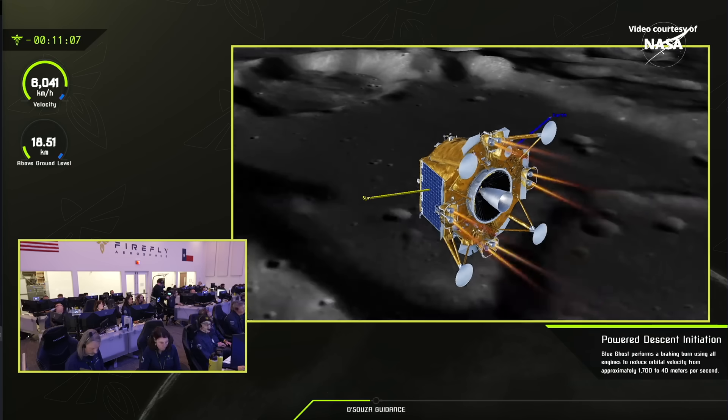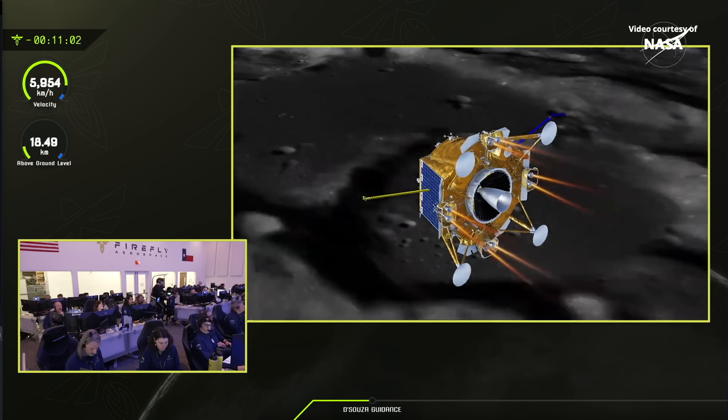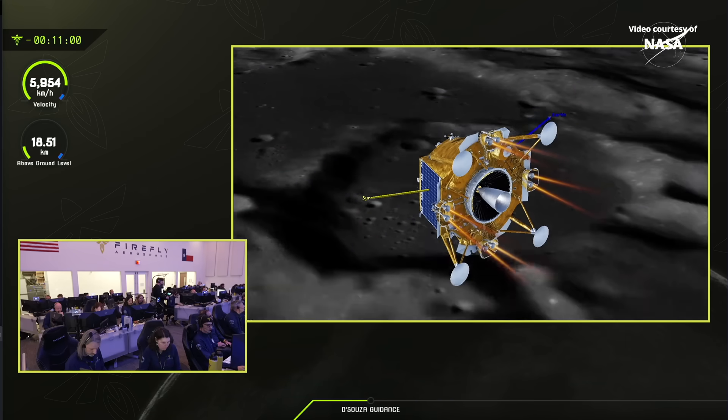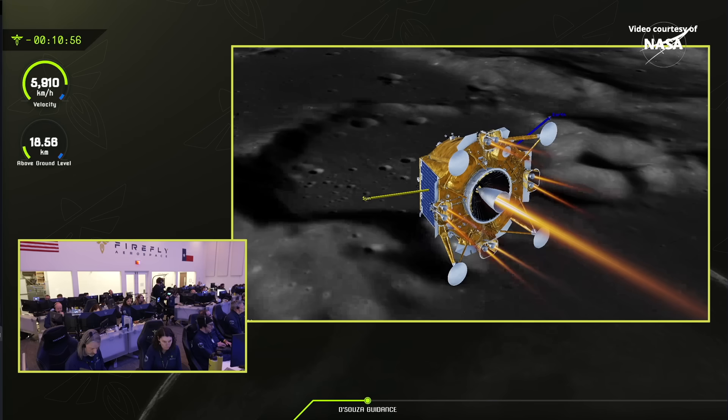So the lander is performing that nine-minute power descent initiation using all of its engines to reduce. And you can see that on the simulation right there with the engines going. Main engine is on. Main engine is on. We see that. Descent critical.